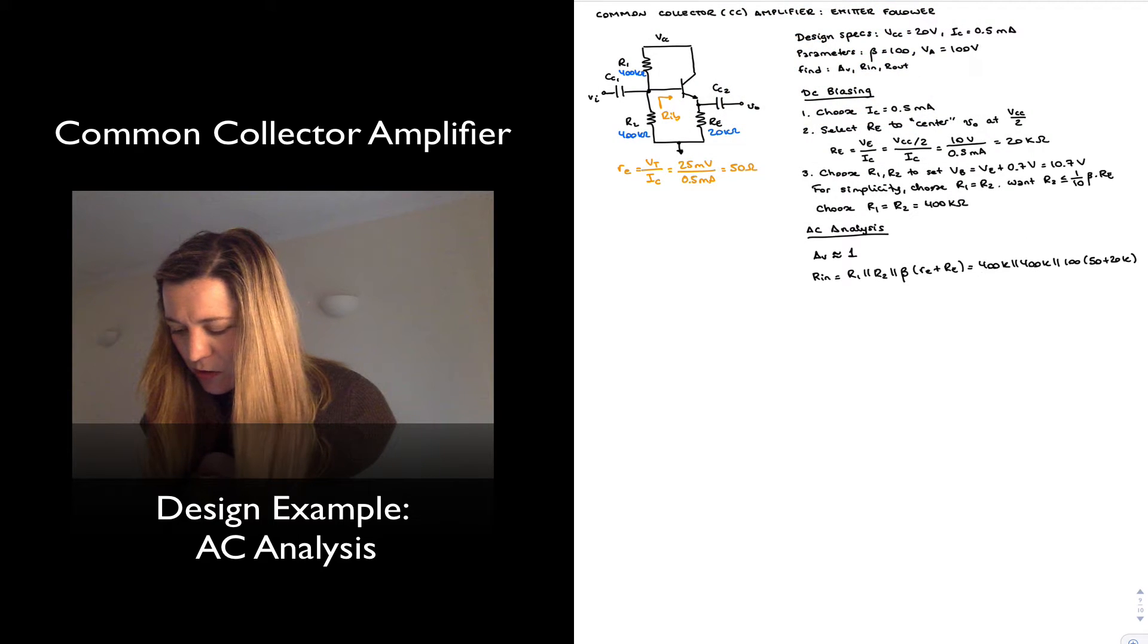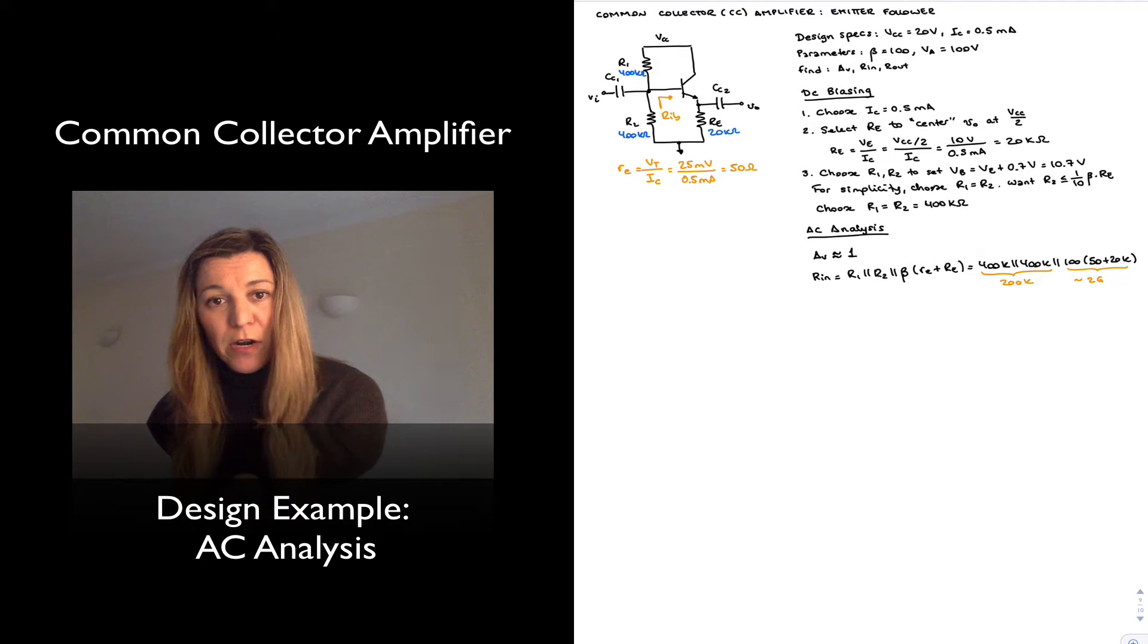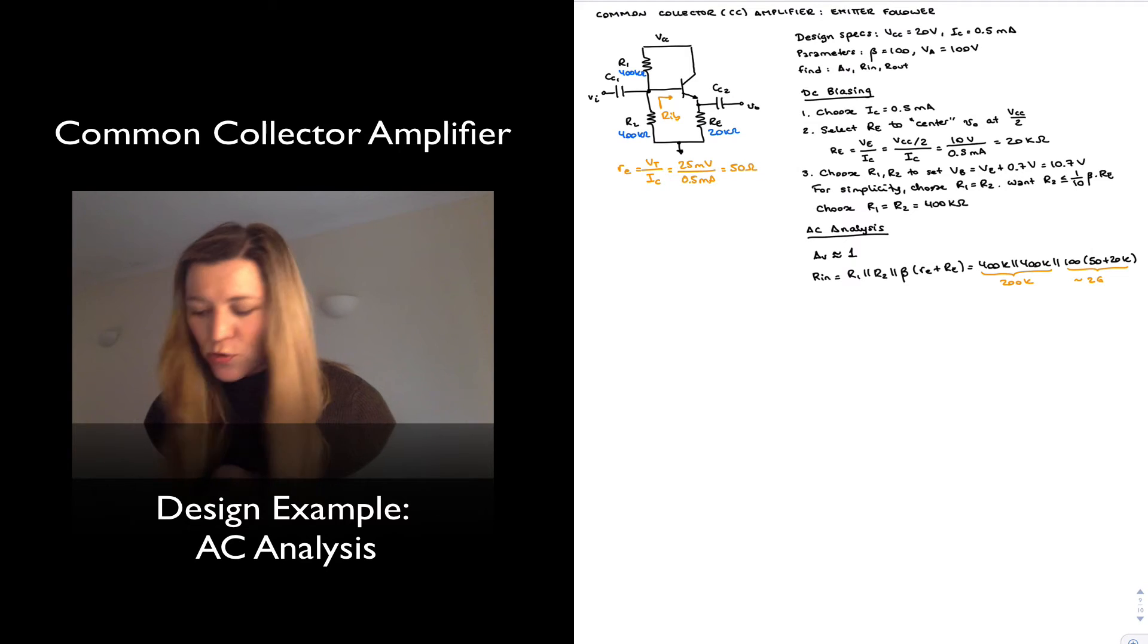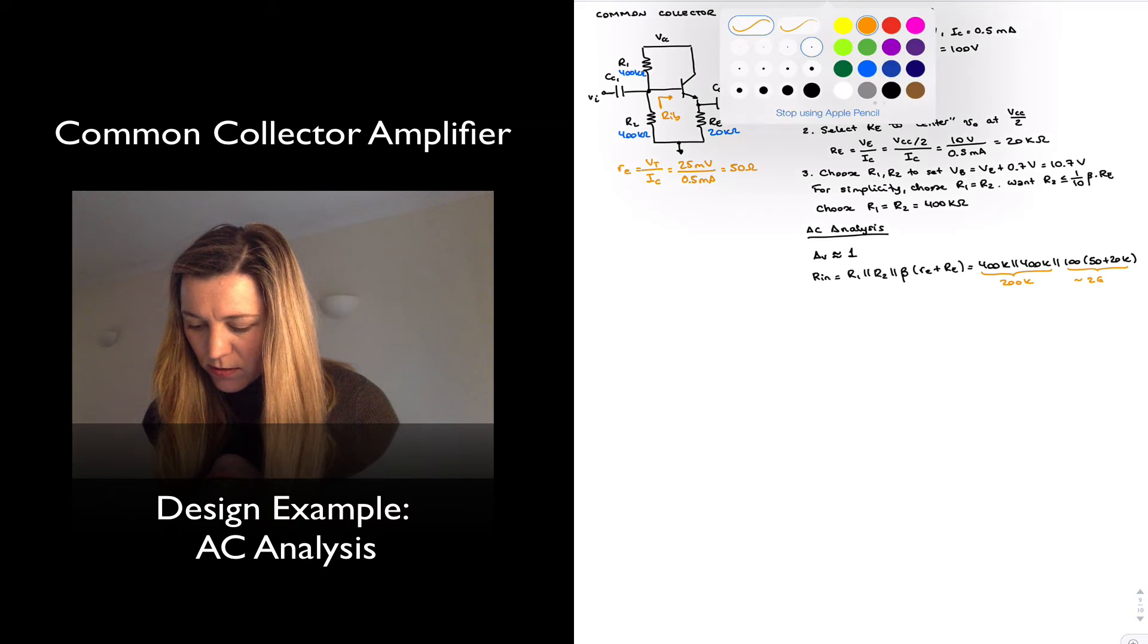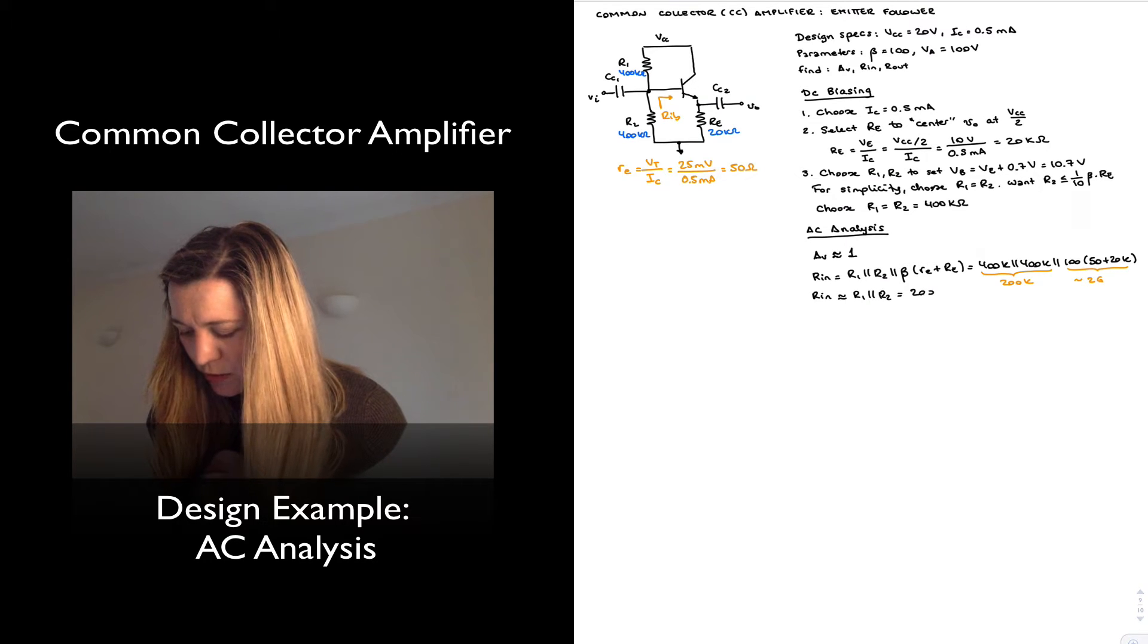And we can see that this parallel combination is approximately equal to 200k, and this will be approximately equal to 100 times 20k, that's going to be 2 gigs. So the parallel combination of 200k and 2 gig is going to be approximately equal to 200k. And so my R in is approximately equal to R1 in parallel with R2, or 200k.